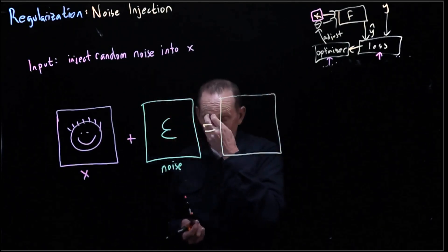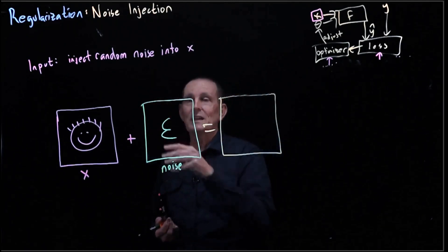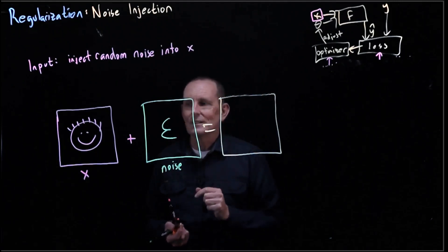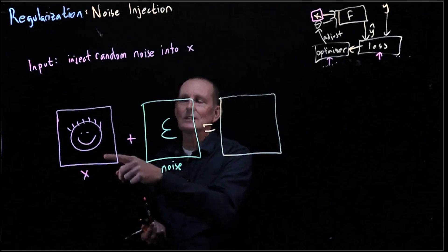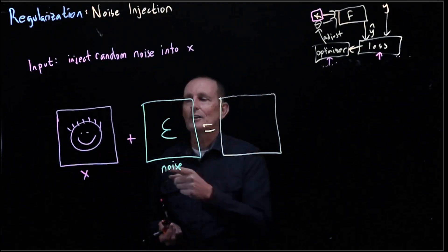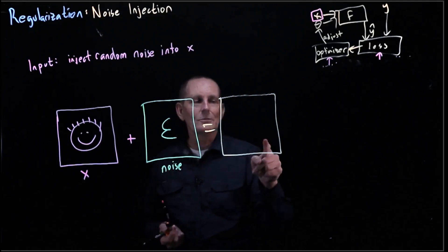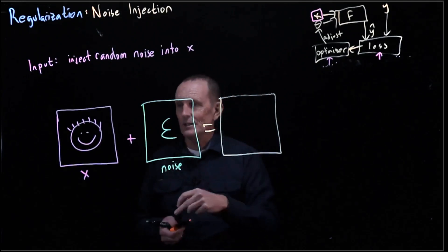And then this equals some slightly modified version of the picture. What do I mean by noise? What's the noise going to be? Well, it's going to be, let's say, for every pixel, a small plus or minus. So if we've got a particular pixel value here that has a red value of 254, here this would be a positive one, and that would turn it into a red value of 255.